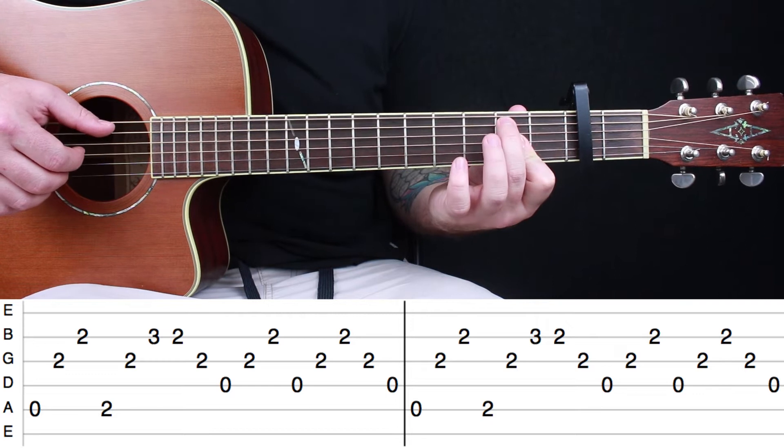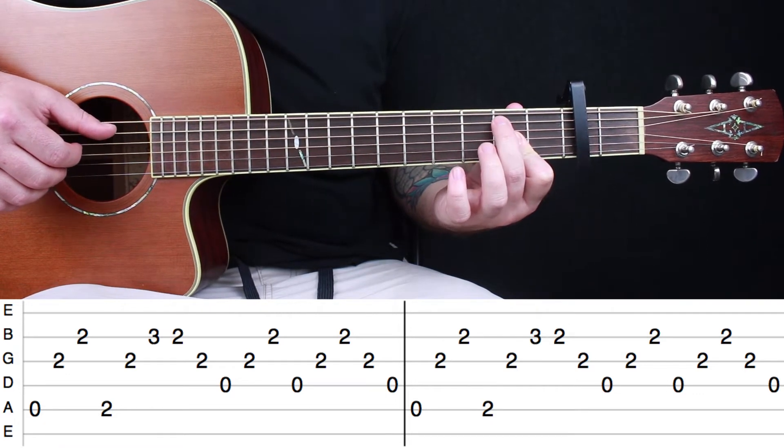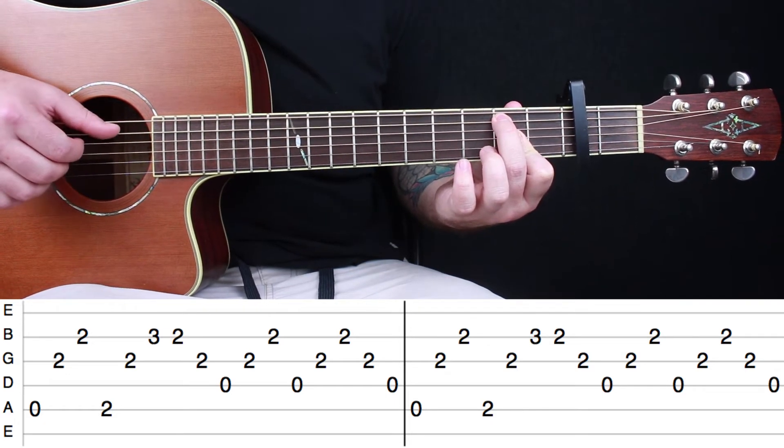Then you're going to put your middle finger on the second fret on the A string, and then you're going to pick A.